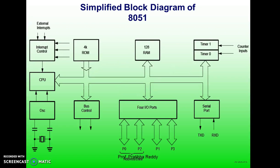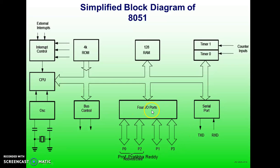Coming to the architecture — which gives better information about how it is designed — it contains two timers (Timer 0 and Timer 1), RAM of 128 bytes, ROM of 4KB, interrupt control, CPU, crystal oscillator, bus control and 4 input-output ports: P0, P1, P2 and P3. All 4 ports are used as bi-directional input-output. A very important feature of the 8051 is the UART — Universal Asynchronous Reception and Transmission — which contains two pins: one for transmitting data and another for receiving data. This is the simplified block diagram of the 8051 microcontroller.